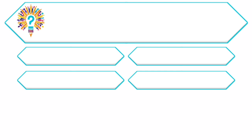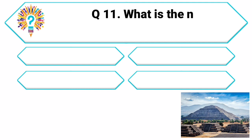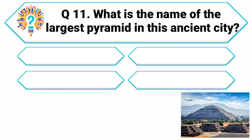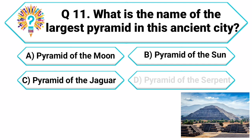Question 11. For our final question, let's talk about the pyramids of Teotihuacan in Mexico. What is the name of the largest pyramid in this ancient city? Your options are: A. Pyramid of the Moon, B. Pyramid of the Sun, C. Pyramid of the Jaguar, D. Pyramid of the Serpent.